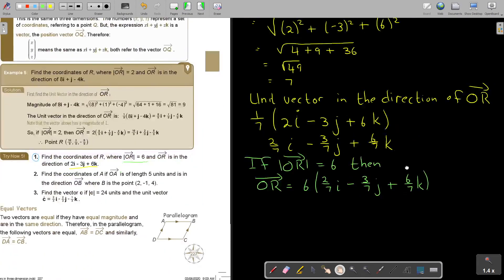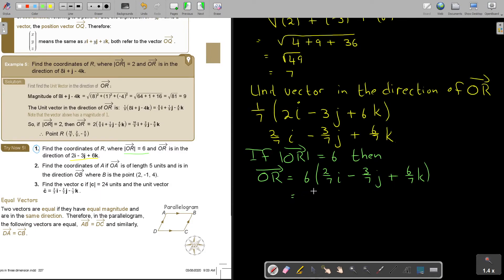And now, I'm going to get, if I multiply, so it's 12 over 7I minus 18 over 7J plus 6 times 6, 36 over 7K.